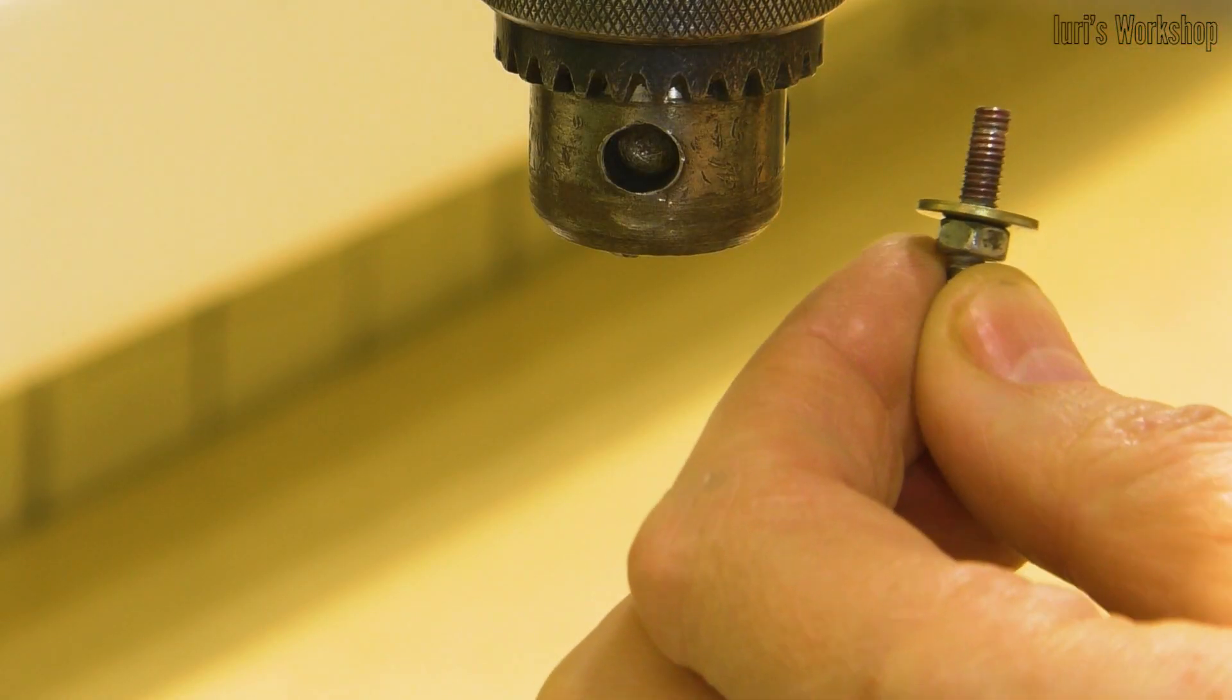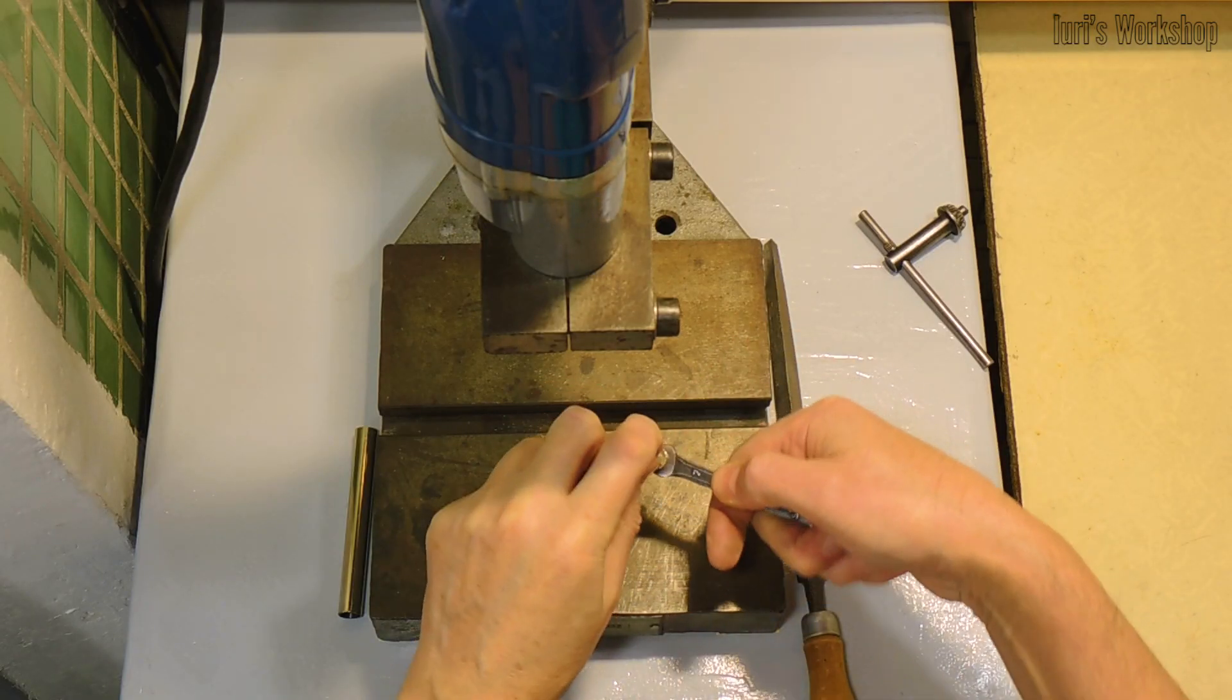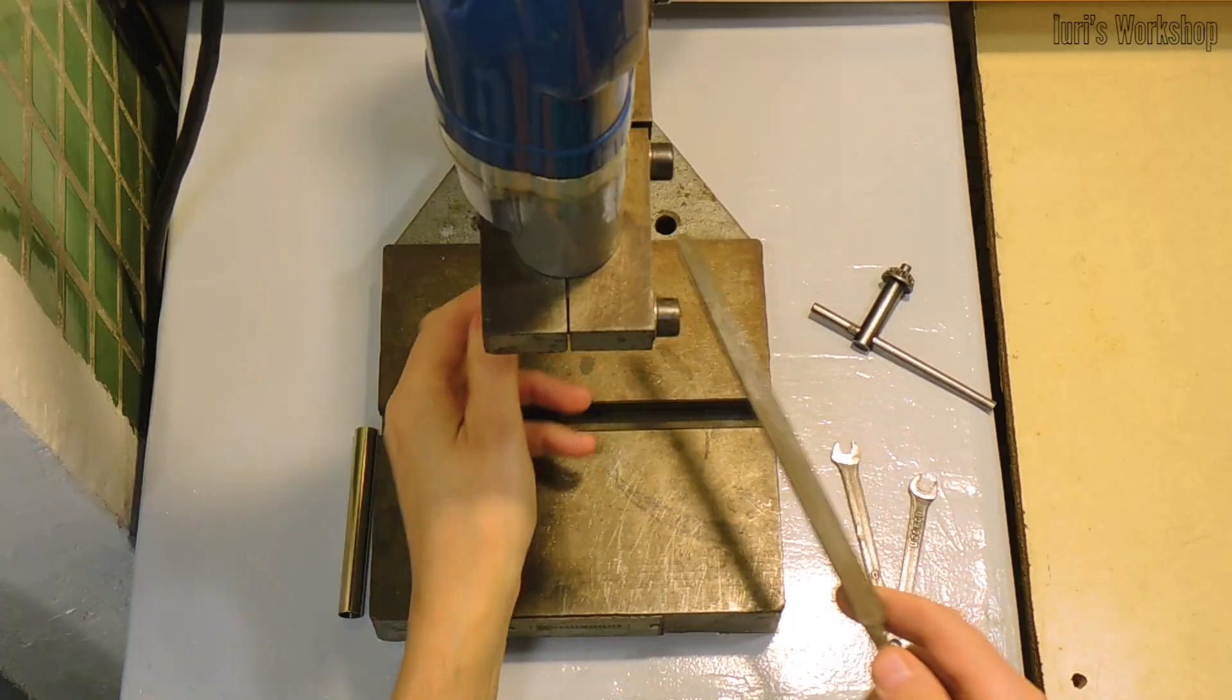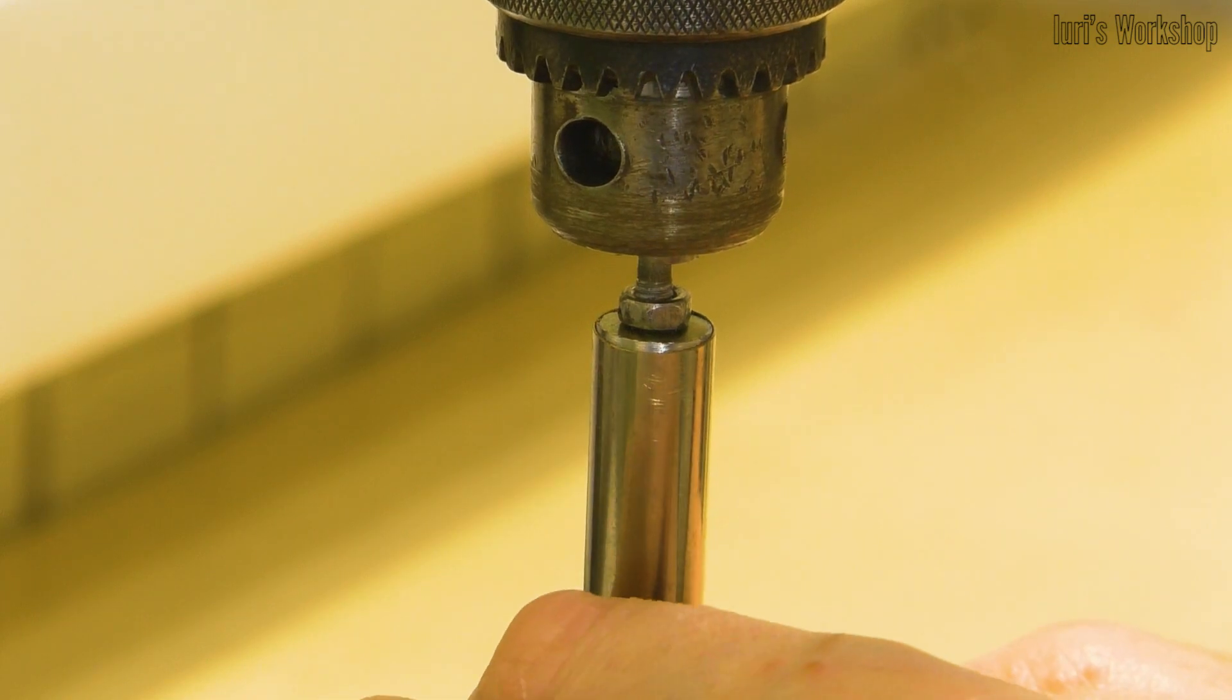The outer diameter of this washer we need to adjust to the diameter of the case so that the washer enters the case with some tension. Do this gradually, if you have only one suitable diameter washer.